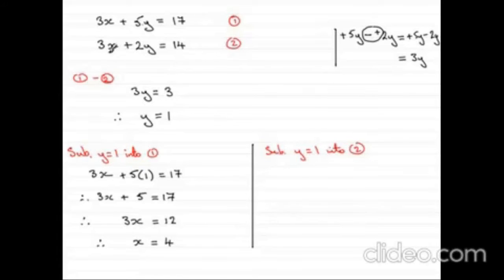Substitute y equals 1 into equation 2. Here, 3x plus 2 lots of 1 equals 14. We have just written that equation and substituted the value of y by 1. So 3x plus 2 equals 14.